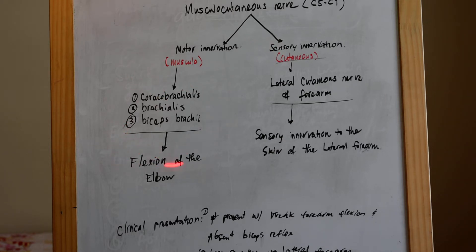For the motor innovations, the musculocutaneous nerve provides innovations to the major upper arm flexors. They include the coracobrachialis, the brachialis, the biceps brachii, and the brachialis. These three major muscles provide flexion of the elbow.